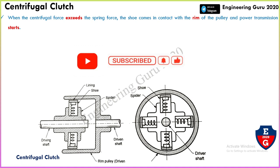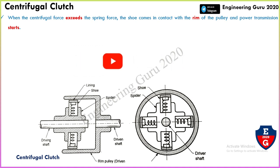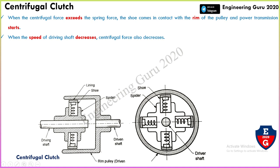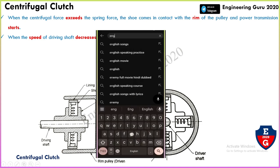This is the basic concept of the centrifugal clutch. When the speed of the driving shaft decreases, the centrifugal force also decreases. This causes the shoe to move in the inward direction.